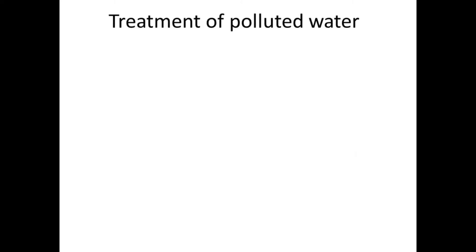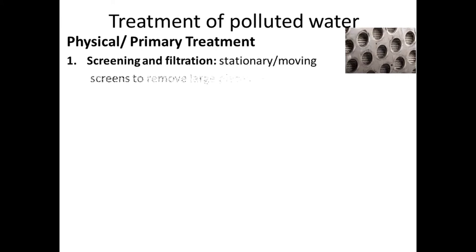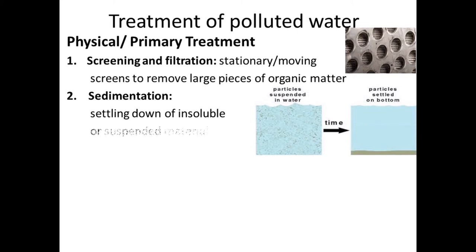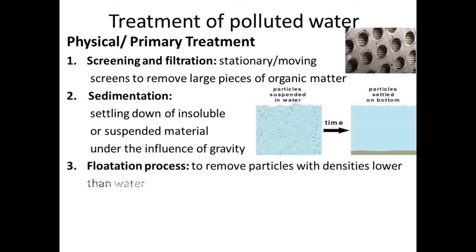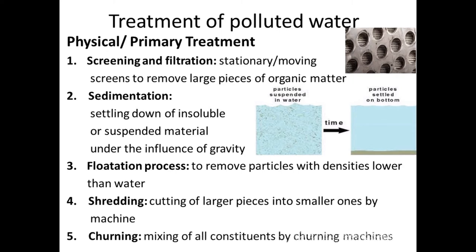These are the various techniques for physical or primary treatment of polluted water. Screening and filtration use stationary or moving screens to remove larger pieces of organic matter. Sedimentation is the settling down of insoluble or suspended material under the influence of gravity. Flotation removes particles with densities lower than water. Shredding cuts larger pieces into smaller ones by machine, and churning mixes all constituents using churning machines.